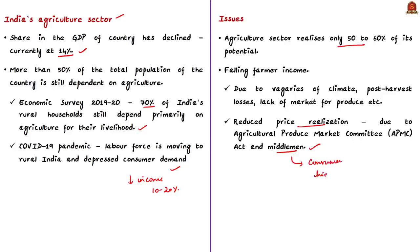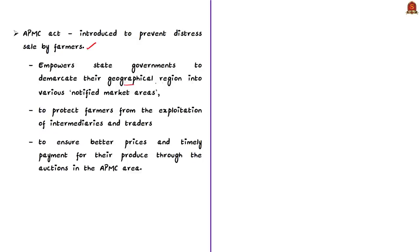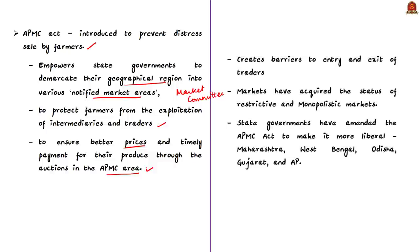The APMC Act was introduced to prevent distress sale by farmers. The Act empowers state governments to demarcate their geographical region into various notified market areas, each headed by a market committee. It was enacted to prevent farmers from exploitation by middlemen and traders, and also to ensure better prices and timely payment through auctions in the APMC area. However, over time, implementation of the APMC Act created barriers to entry and exit, as it restricts farmers from entering into direct contracts with any processor or bulk buyer, requiring produce to be routed through regulated markets.